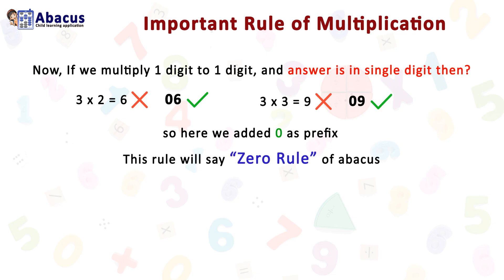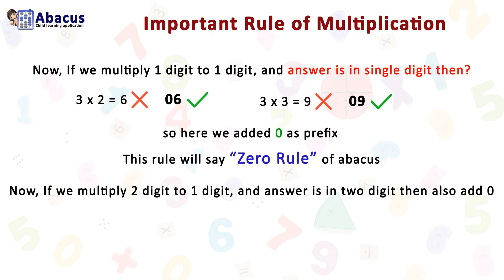When the answer is a single digit but should be two digits, we add a zero as a prefix. This rule is called the Zero Rule of Abacus. Similarly, if we multiply two digits by one digit and the answer is only two digits, we add a zero prefix to make it three digits. For example, 12 multiplied by 4 equals 48, but the correct representation is 048 — that means zero, four, eight — which is three digits.